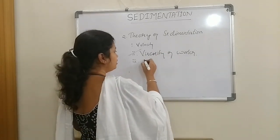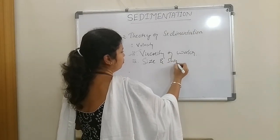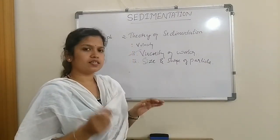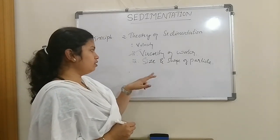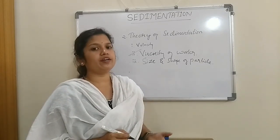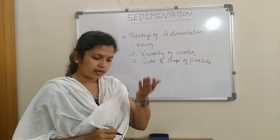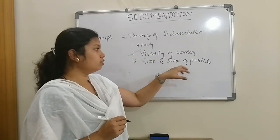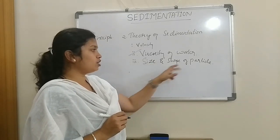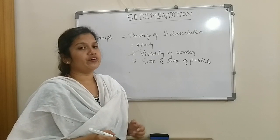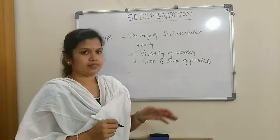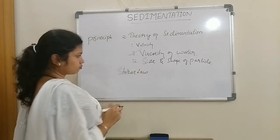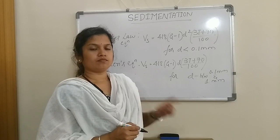The next property that hinders sedimentation is the size and shape of the particle. Size is directly related to sedimentation - as the size of a particle increases, it directly settles to the bottom due to gravitational pull. Shape also has an influence on the settlement of a particle. To understand how size and shape influence the settling rate, we have formulas for calculating settling velocity.